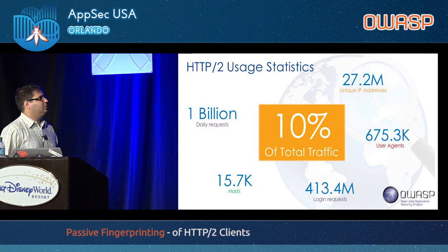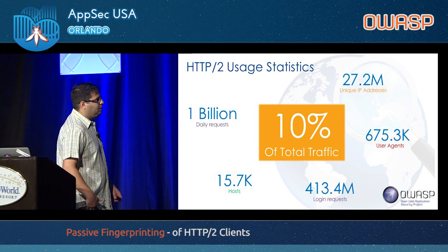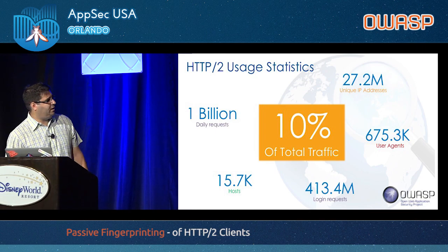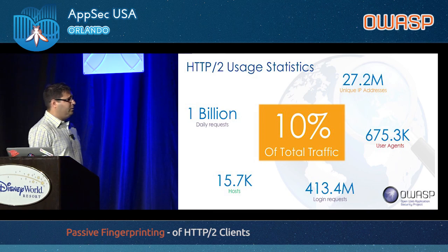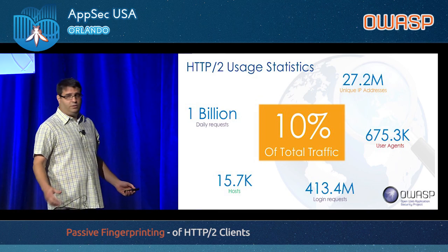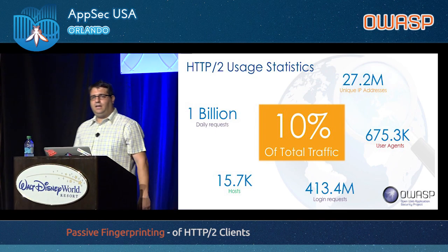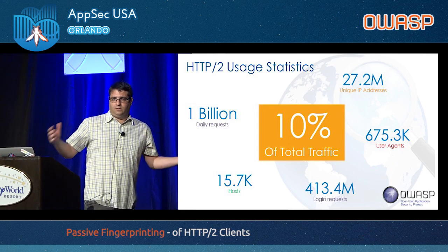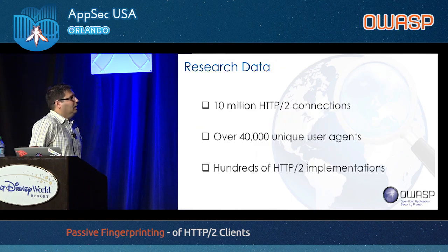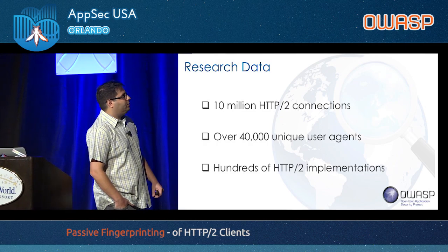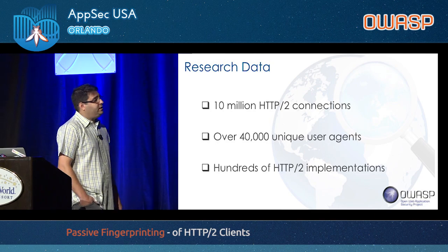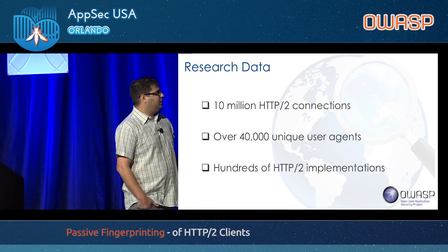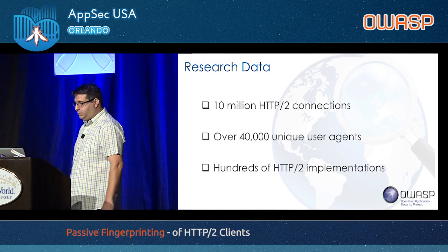Some usage statistics: we see about a billion requests of HTTP/2 daily across almost 16,000 hosts and 27 million IPs using it. It's approximately 10% of total traffic on the platform. I've seen that the last stats published indicate about 17% on the wider internet, but this is what we see. From this platform data, we recorded 10 million HTTP/2 connections and looked at over 40,000 unique user agents and hundreds of HTTP/2 implementations.